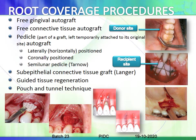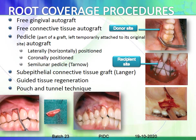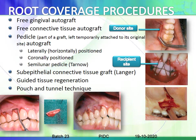The guided tissue regeneration technique uses a membrane to cover the recession area, which is then sutured. The pouch and tunnel technique creates a pouch between the gums and the root surface, into which the free gingival graft is inserted and sutured. Each of these techniques will be covered in detail in the next class.